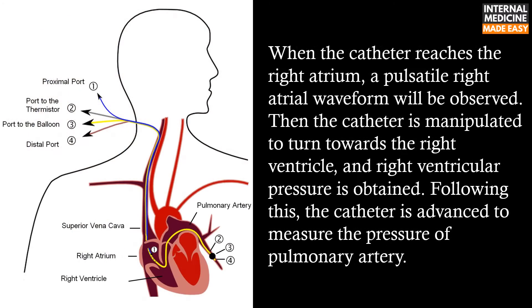When the catheter reaches the right atrium, a pulsatile right atrial waveform will be observed. Then the catheter is manipulated to turn towards the right ventricle and right ventricular pressure is obtained.